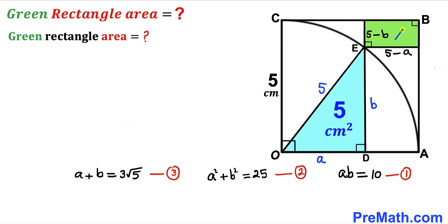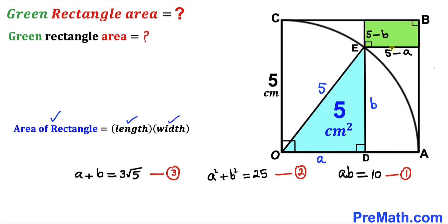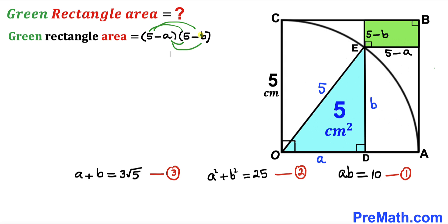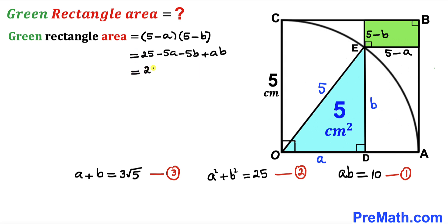Now for the final step, we calculate the area of the green shaded rectangle using the formula: area = length × width = (5 - a)(5 - b). Expanding using the FOIL method gives: 25 - 5a - 5b + ab, which we can rewrite as 25 - 5(a + b) + ab.